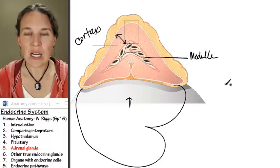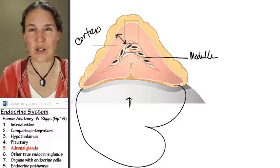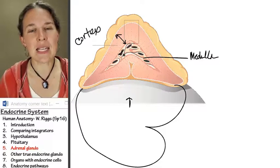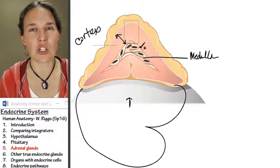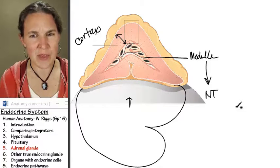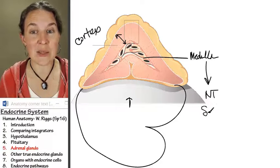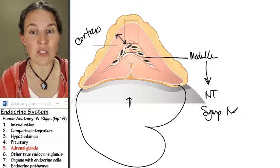The medulla of the adrenal gland produces, it's so weird. Well, it makes sense if you think about it as nervous tissue. It basically produces neurotransmitters that are involved in a sympathetic nervous response.